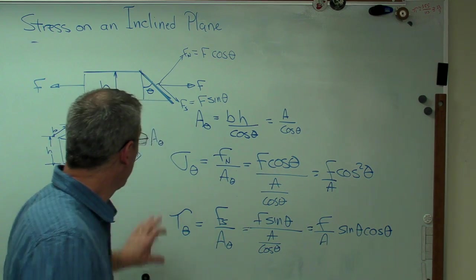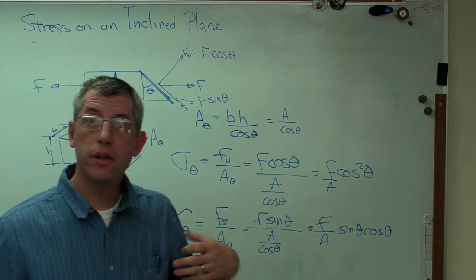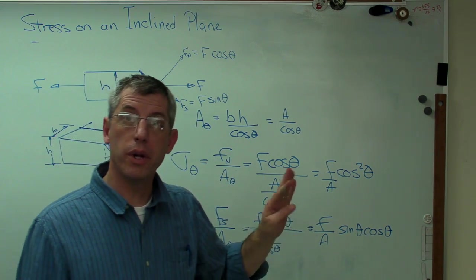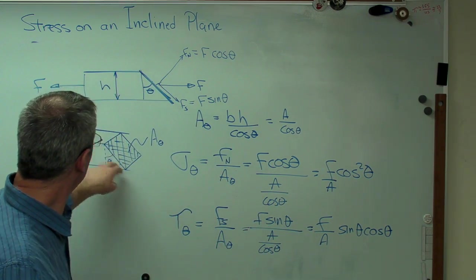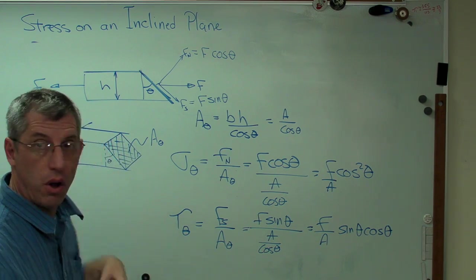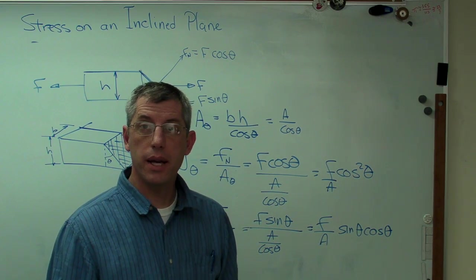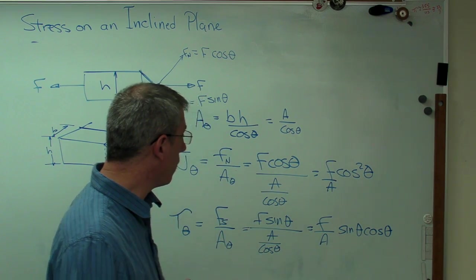And all we just did was we used the definition of stress force over area. I broke my force down into vector components, a normal and a shear component, and I used this area now, which is larger because it's cut at an angle. And so that was the original area divided by cosine theta. So this is pretty straightforward now.